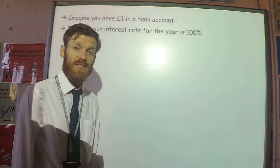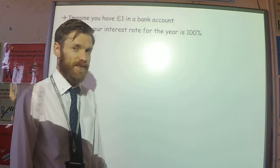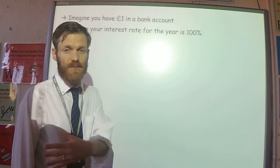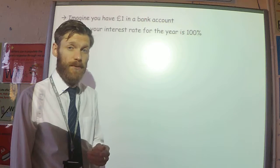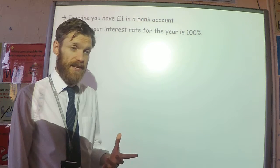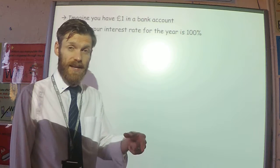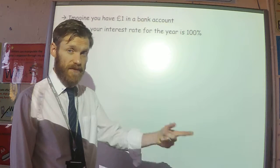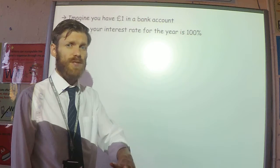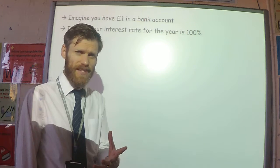So that means at the end of the first year you'll have two pounds, because you'll make 100% of your original amount back. Then the bank manager comes to you and says, I've got a better deal for you. Rather than giving you 100% at the end of the year, what about if I give you 50% after six months and then the other 50% at the end of the year — split into two installments? We can work out whether we'd be better off with that deal.